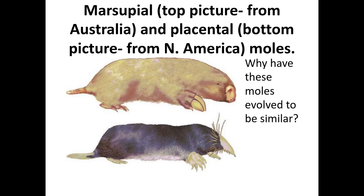The more familiar marsupial is the kangaroo, which has a pouch and can actually support three live young at the same time. She can have a joey outside of her pouch, a joey inside her pouch attached to one of the teats, and then another joey inside the uterus in a paused state.